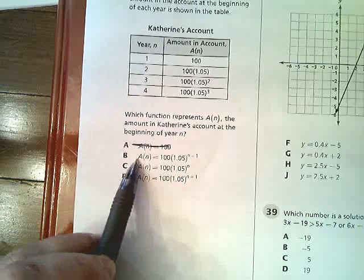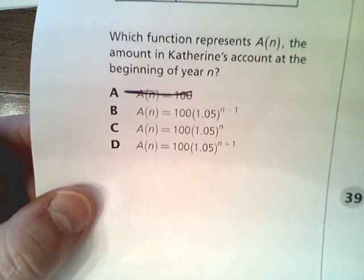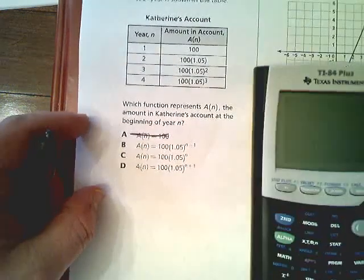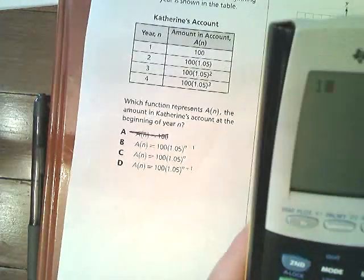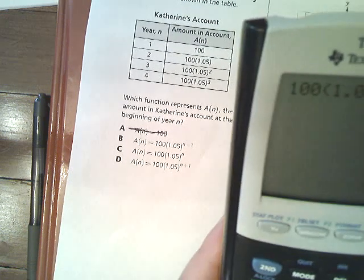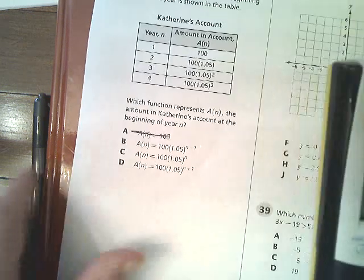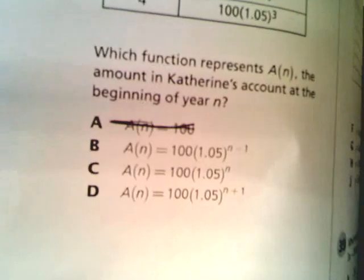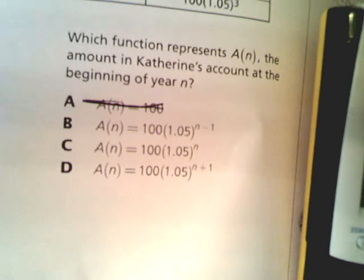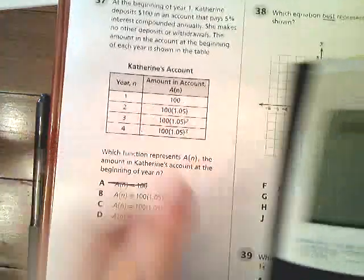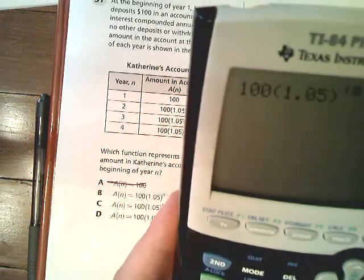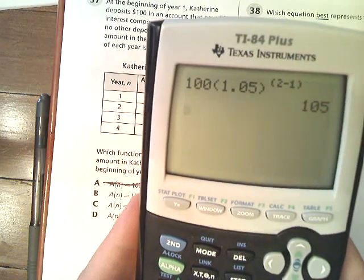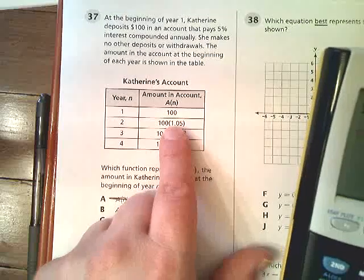What we can do is try option B, which says 100 times 1.05 to the power of n minus 1. We're going to plug in n equals 2, so that's 2 minus 1. It gives us 105, which is exactly what it should give.